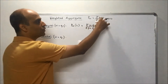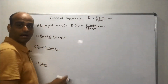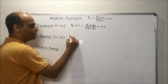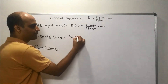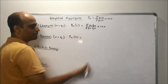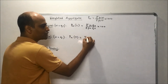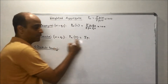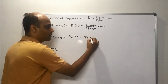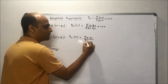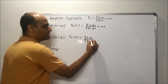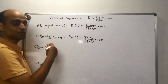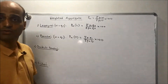Next, if I replace w by q1, I get the Paasche's index. So P01(P) — P for Paasche's — is summation p1·q1 upon summation p0·q1, multiplied by 100. The weightage here is q1.